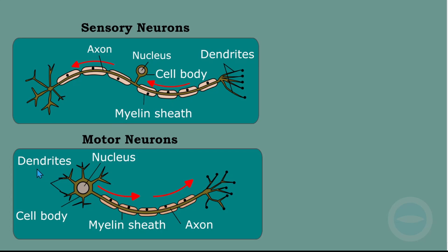The direction of the impulse is from the dendrite, to the cell body, and then the axon. To remember this, we can label the parts A, B, C, D — but the direction of the impulse in a neuron goes D, C, B, A. D is for dendrite, B is for cell body, and A is for axon. In the sensory neuron, the direction is also dendrite, then cell body, then axon — this is how we explain the direction of the impulse inside the neuron.